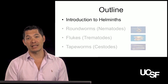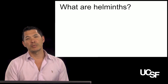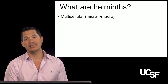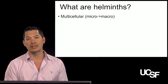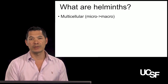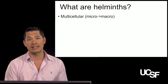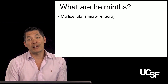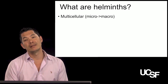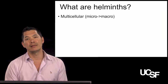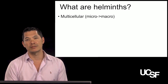Let's start with the introduction to helminths. So what are helminths? Helminths are multicellular organisms, in contrast to protozoa, which you've also heard about in this class, which are single-cellular organisms. They are macroscopic, so you can see many of them, although some of them in many of their stages are microscopic as well.